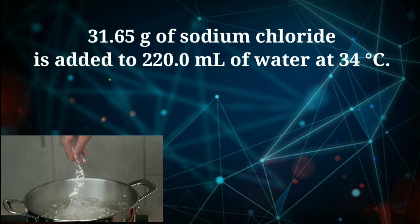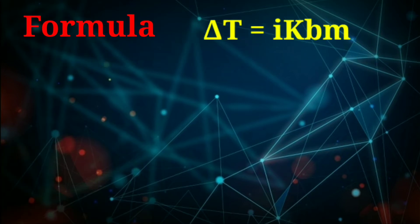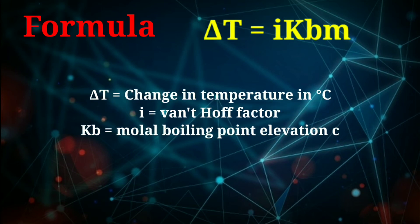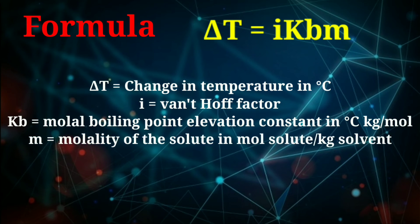First, we will talk about the formula. Delta T is equal to i times Kb times m. This is Kb, the molal boiling point elevation constant. This is the molality.